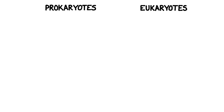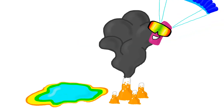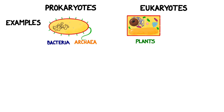Cells are categorized into two major groups: prokaryotes and eukaryotes. Usually it's easier to remember the differences if we look at a couple of examples first. You may already know that bacteria are prokaryotes, but so are archaea. These ancient microbes are still around and they're known as extremophiles because they live in environments like deep-sea vents, thermal pools, and oil wells. Eukaryotes include plants, animals, fungi, and protists.